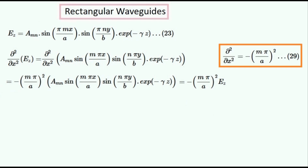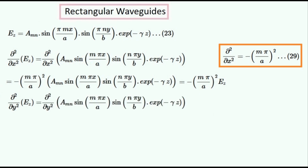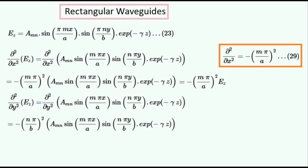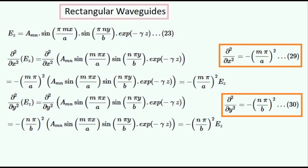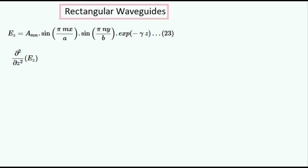Therefore we can say that this partial derivative is equal to this expression, which may be calculated to be a number. We can follow a similar procedure to find out what this partial derivative operator is equal to. We'll substitute this expression into it, and evaluating this differential equation gives us an expression equal to this. So this partial derivative operator is equal to this expression, which may be evaluated to be a number.